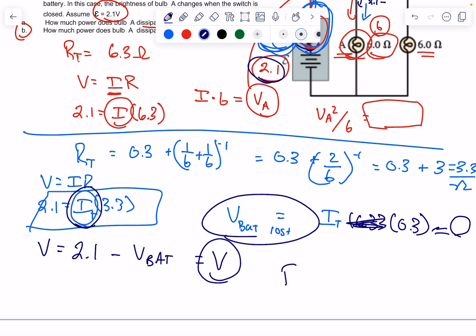Now you plug that in—you square it, you divide by the resistance, which is still 6. So it's V squared over 6, not 6 squared—just V squared over 6. Bing, you got it.